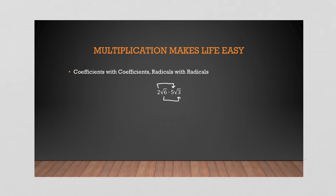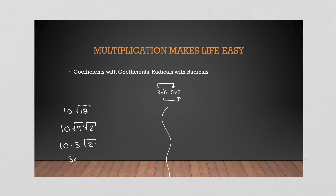The only thing we need to consider is: can we simplify the radical after the fact? Because what we saw when we simplified radicals was we needed two identical factors. You can actually tackle this a number of different ways, so I'll show you two here. In this case, two times five is ten, and the square root of six times the square root of three is the square root of eighteen. Well, the square root of eighteen is the square root of nine times the square root of two, so that's ten times three times root two, which is thirty root two.